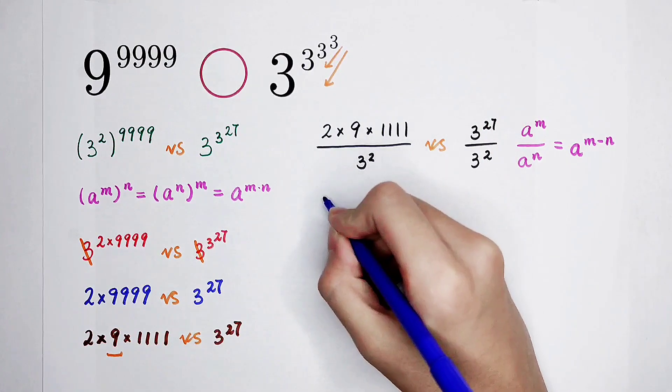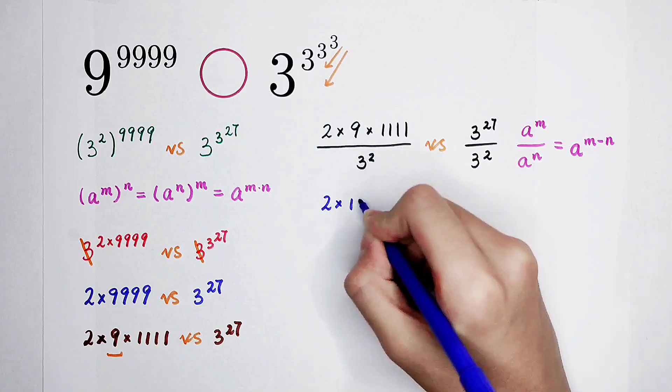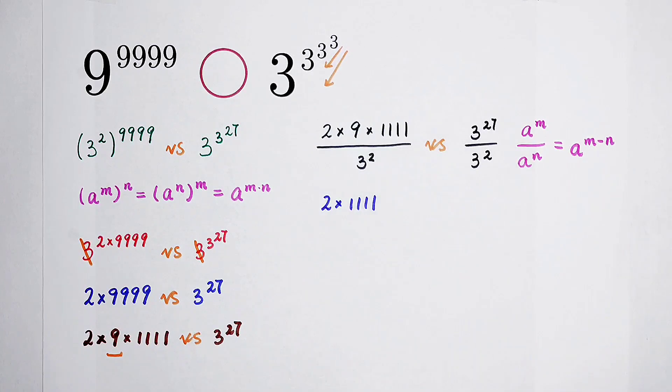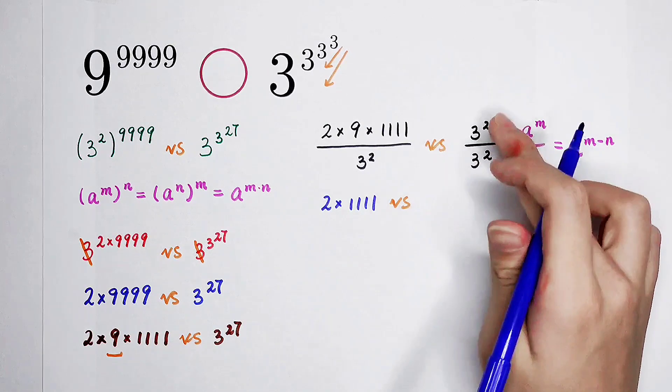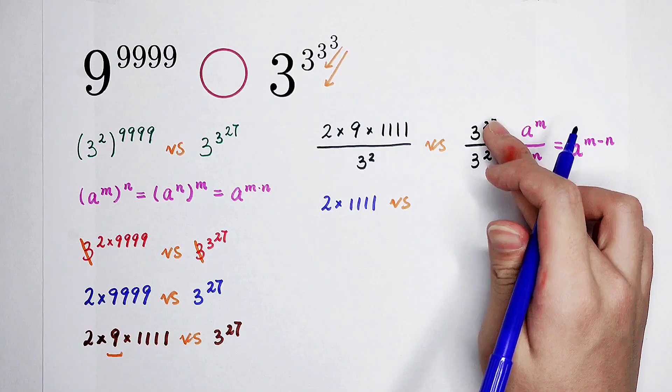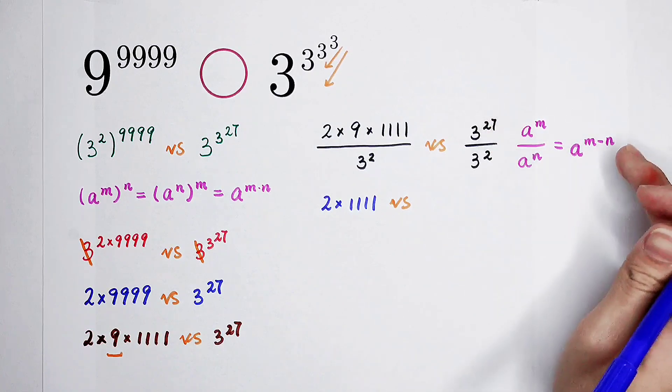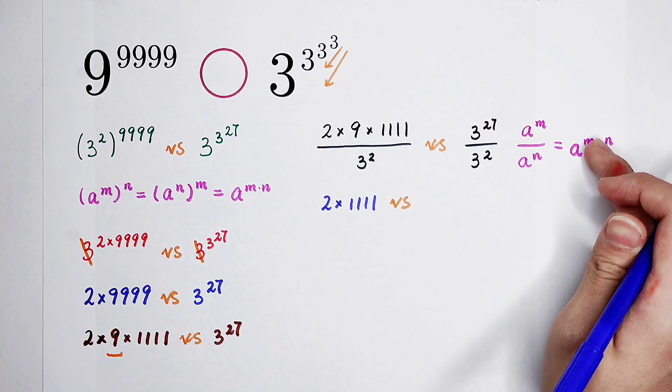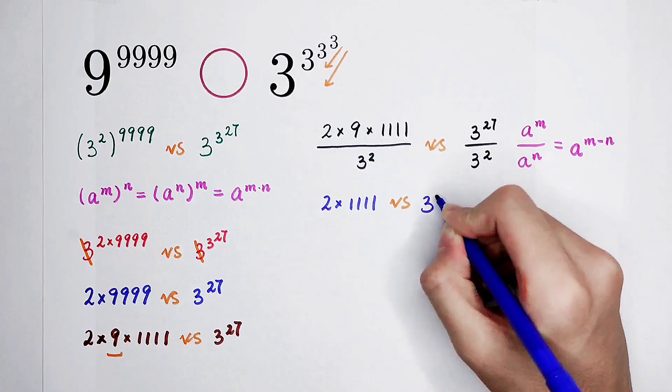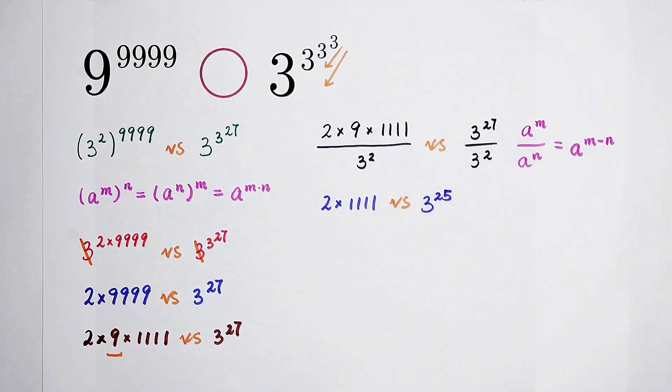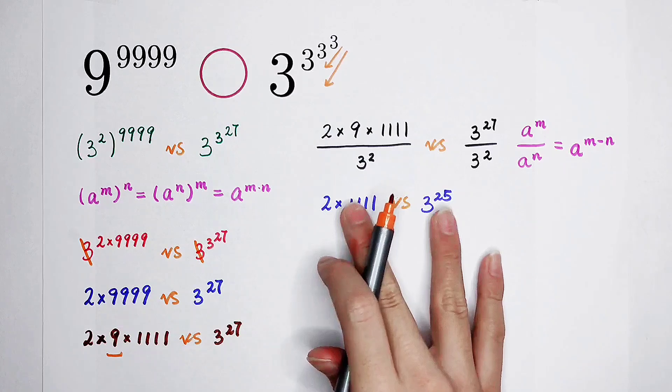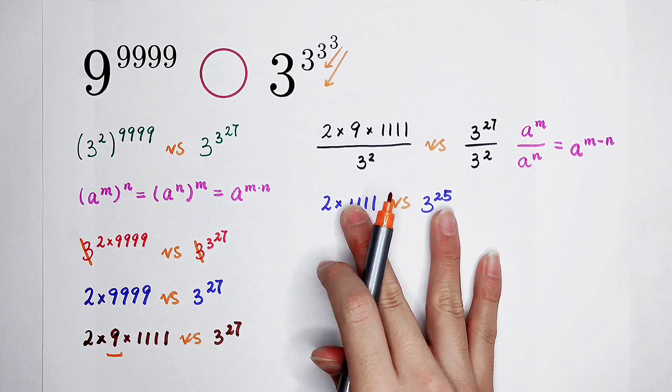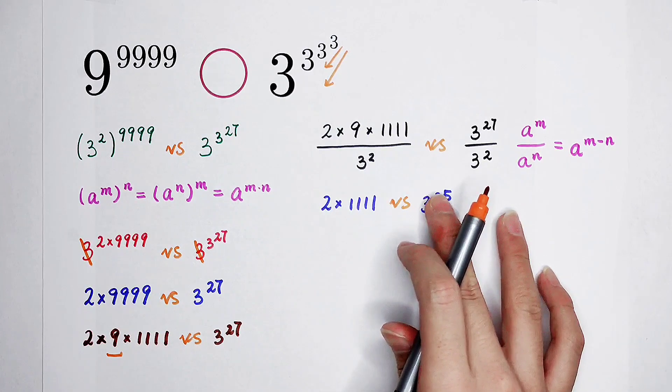There's just 2 times 1111 left on the left hand side. And the right hand side, 3 to the power of 27 divided by 3 to the power of 2 is 3 to the power of 27 minus 2 is 25.